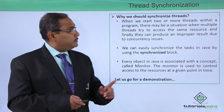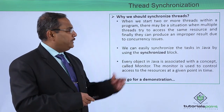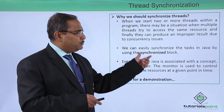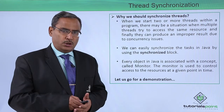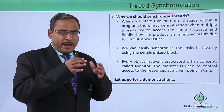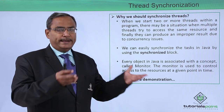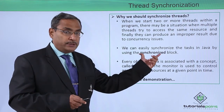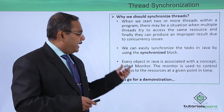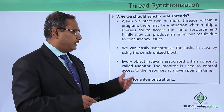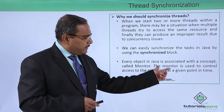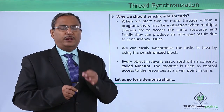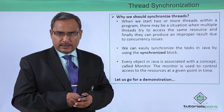Why should we synchronize threads? When we start two or more threads within a program, there may be a situation when multiple threads try to access the same resource, and they can produce an improper result due to concurrency issues. We can easily synchronize tasks in Java using the synchronized block. Every object in Java is associated with a concept known as the monitor, which is used to control access to resources at a given point in time — monitoring how resources get allocated to the respective processes.